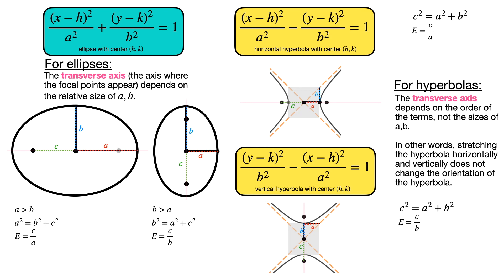Whenever the transverse axis is horizontal, the foci appear on the horizontal axis and the eccentricity is given by c over a. Whenever the transverse axis is vertical — the foci appear on the vertical axis — the eccentricity is going to be c over b.